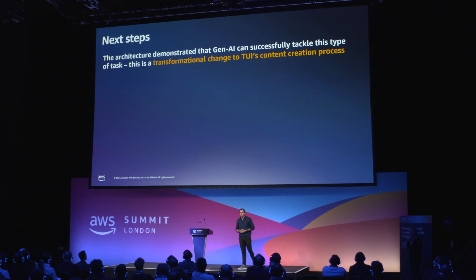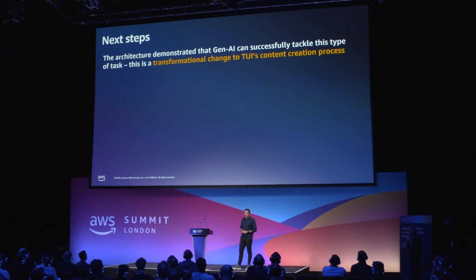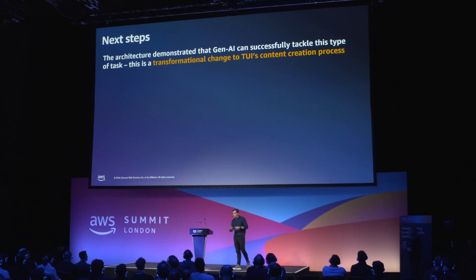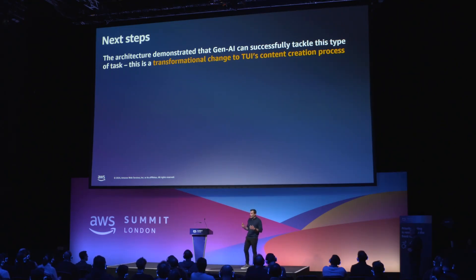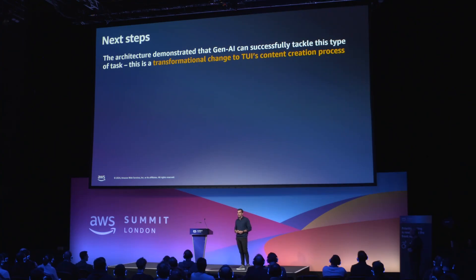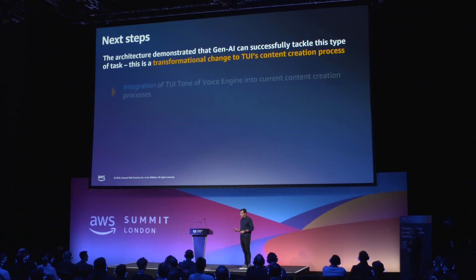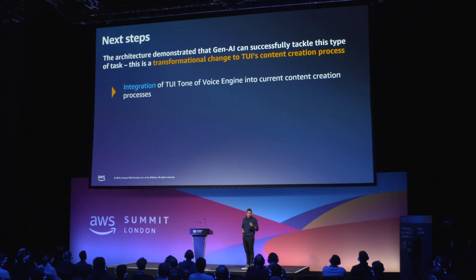What are our next steps? TUI's CEO Peter Jordan stated that TUI is committed to utilising Gen AI and changing the traditional way that we operate. We want to be more efficient and provide our customers a more personalised experience. This use case is a great example of that — the architecture demonstrated that Gen AI can successfully tackle this task. It's a transformational change in the way that we are creating content. Right now, we are integrating the TUI tone of voice engine into the current content creation process.